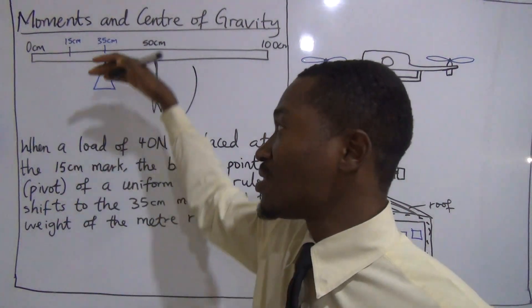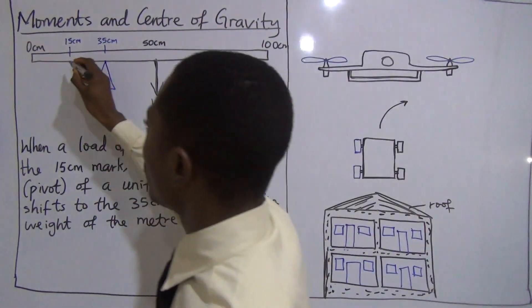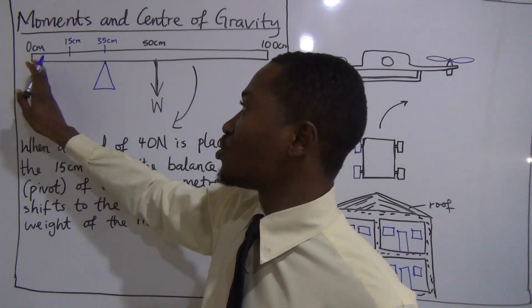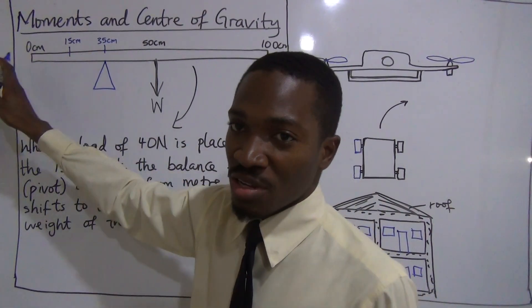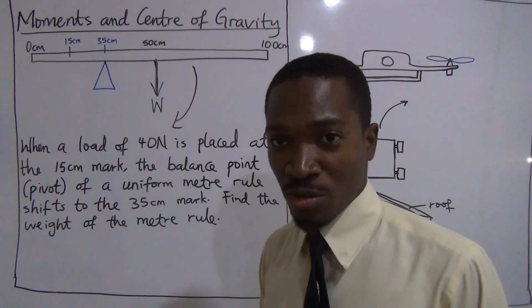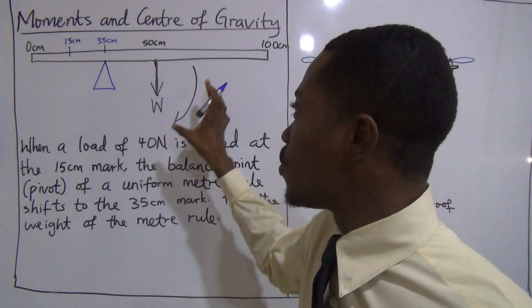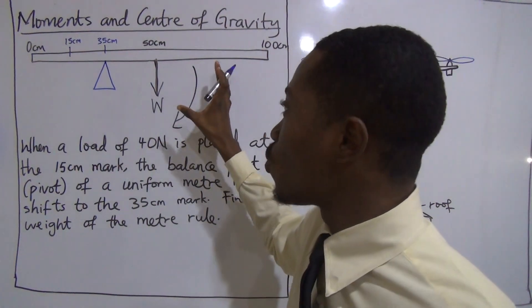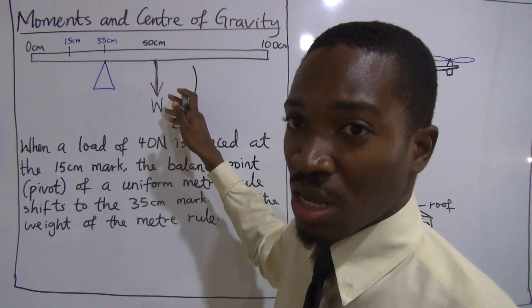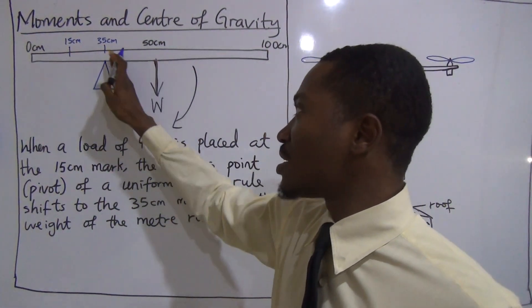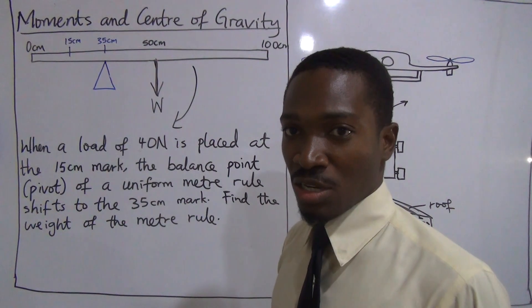So for you to balance this meter horizontally, you have to place a force on the left hand side. It could be here, it could be here, anywhere on the left hand side. You have to place a force that will produce a moment that is equal to the moment on the right hand side. What is the moment on the right hand side? The weight multiplied by the distance from the pivot.